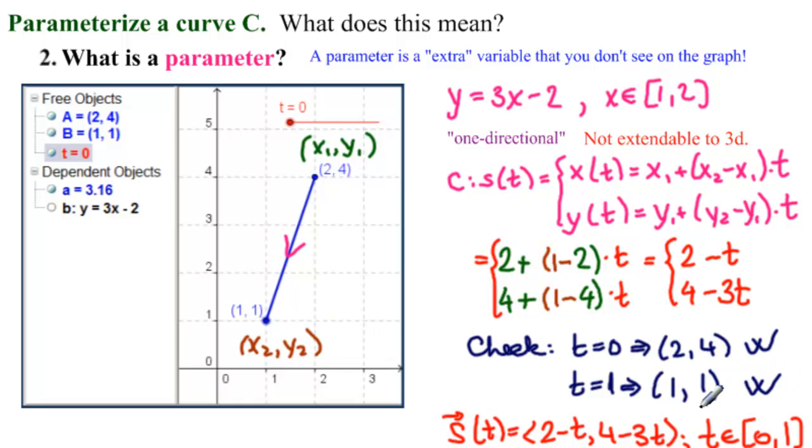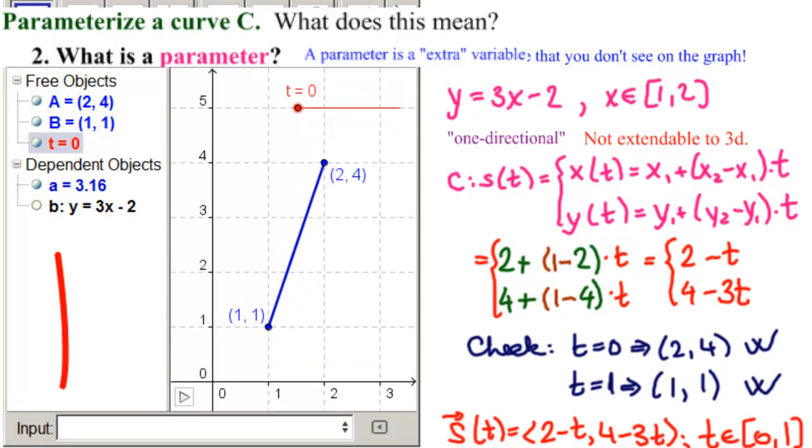And now we're going to try this in GeoGebra and see the point move using this formula from two, four to one, one as we want it to. So now let's make a point down here in the input bar. Capital P equal to, and then what do we have? Two minus T. That's the name of our slider. Four minus three times T. We hit enter.